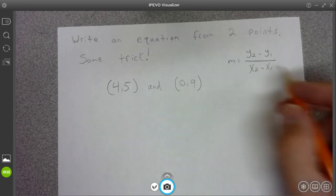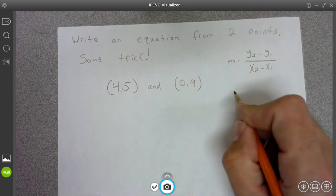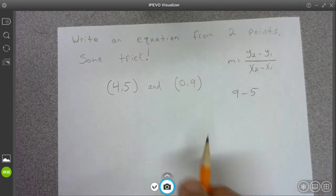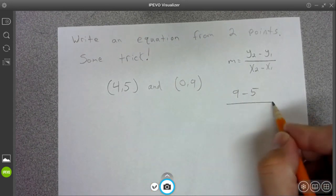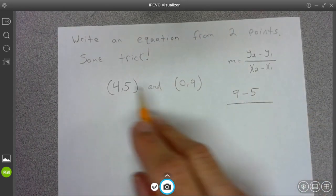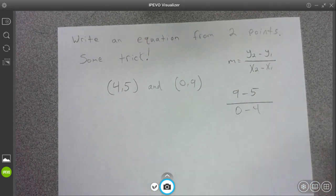So to write the equation, y2 minus y1, which is 9 minus 5, that one minus that one, over x2 minus x1, so 0 minus 4.